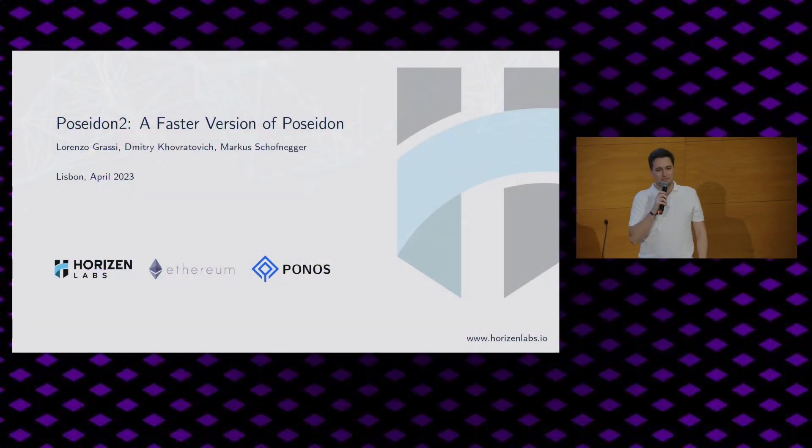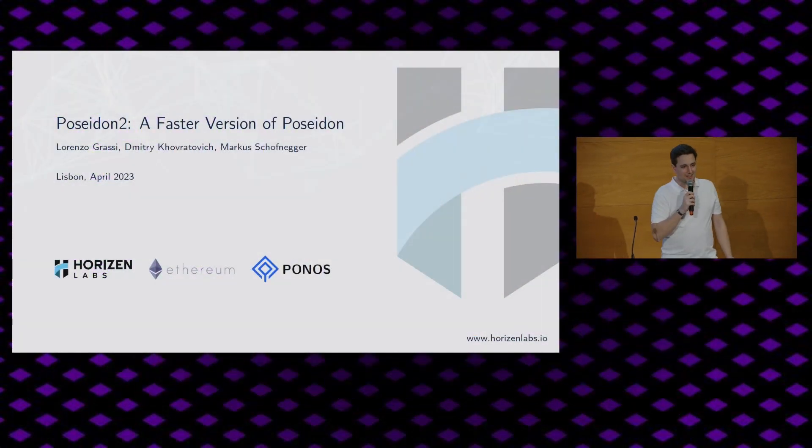So yeah, let's start. So first, this is joint work together with Dimitri and Lorenzo from Ethereum and Ponos. And yeah, welcome. This talk will be about Poseidon 2, which is a faster version of the Poseidon hash function.